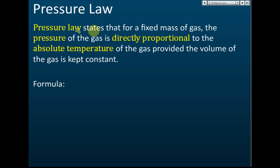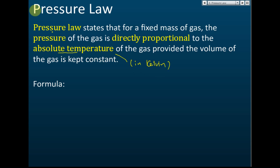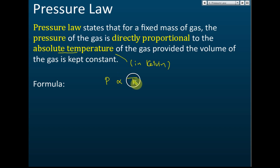The pressure law states that for a fixed mass of gas in a closed system, where the mass of the gas is constant, the pressure of the gas is directly proportional to the absolute temperature. The absolute temperature is the temperature in Kelvin — you cannot give the temperature in degrees Celsius, it must be in Kelvin. So pressure is directly proportional to absolute temperature, meaning if temperature increases, pressure increases.